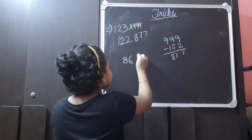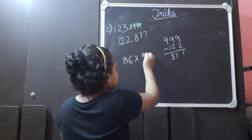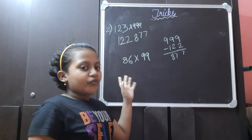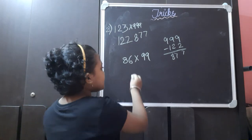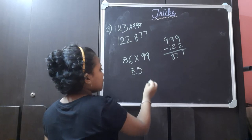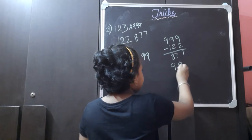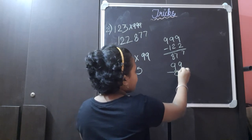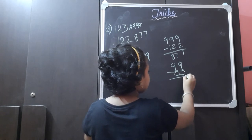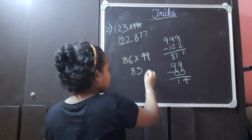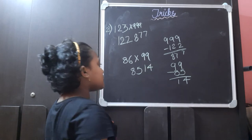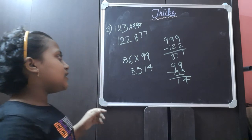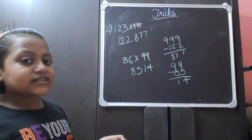For another example, 86 into 99. First we subtract 1 from 86 to get 85. Then 99 minus 85 gives us 14. We place 14 directly beside 85, and the answer we get is 8514. This is the answer for 86 into 99. This was the method for how to multiply with the 9 series.